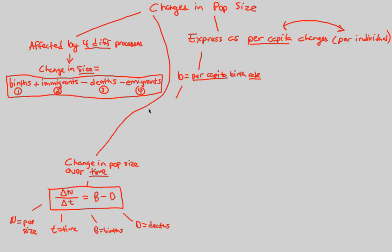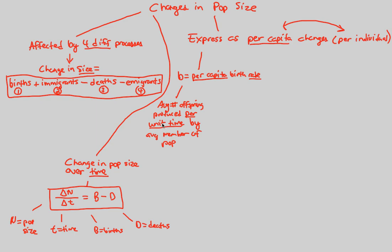The per capita birth rate is defined as the average number of offspring produced per unit time by the average member of a population. We look at a rate because a rate always involves a course of time. So: average number of offspring produced per unit time by the average member of the population — not the most fit or the least fit, just the average.